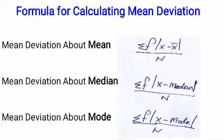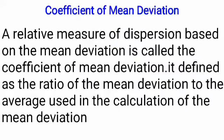The coefficient of mean deviation is a relative measure of dispersion based on the mean deviation. It is defined as the ratio of the mean deviation to the average used in the calculation of the mean deviation. A coefficient is a relative measure of dispersion, and the coefficient of mean deviation is clearly understood by using the formulas.